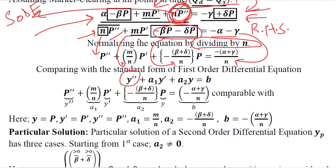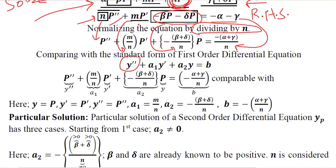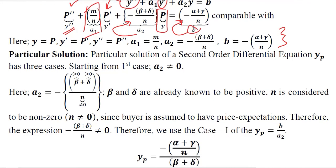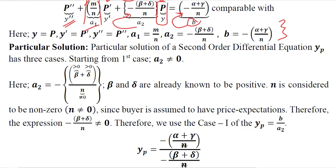After normalizing it, we are able to compare it with the standard form. Instead of y'', we have P''. Instead of y', we have P'. Instead of a₁, we have m/n. In place of p, we have y. In place of a₂, we have this expression. And b, the constant, is now equal to this term. We have extracted all these values, and now we can survey them to decide which case is holding here.